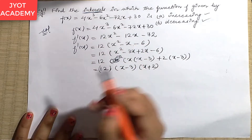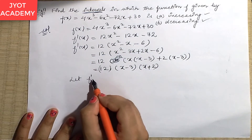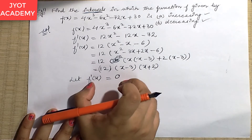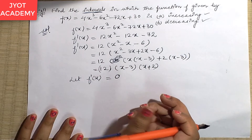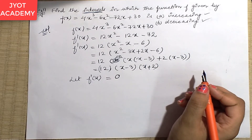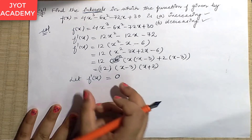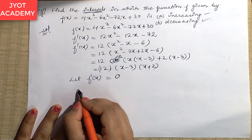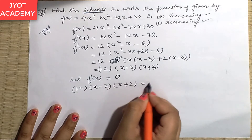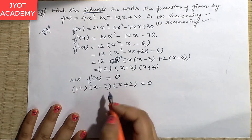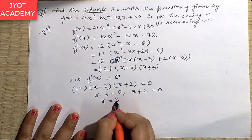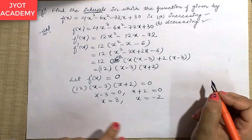Next step: let f'(x) = 0. We do this because we need the x values that define our intervals. Setting f'(x) = 0, since 12 is nonzero, we get (x - 3)(x + 2) = 0. So x - 3 = 0 gives x = 3, and x + 2 = 0 gives x = -2. These are our two critical points.